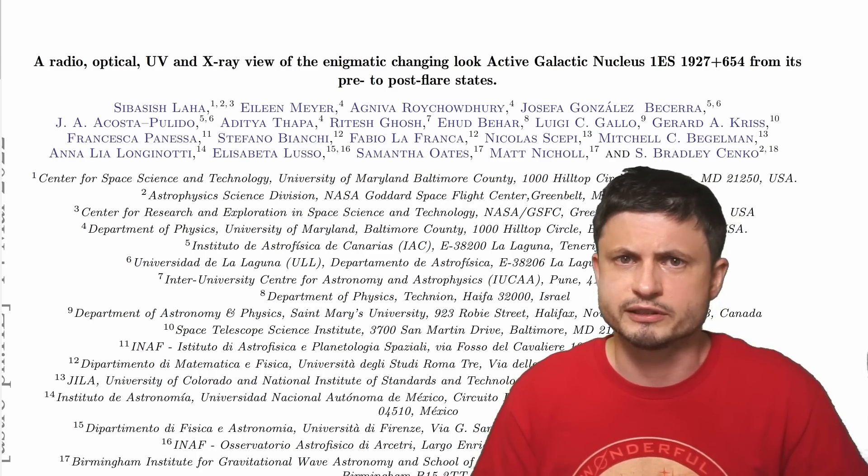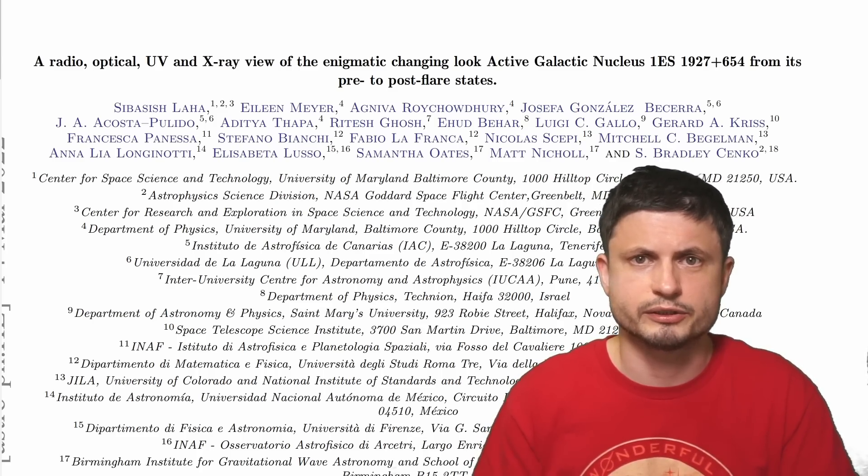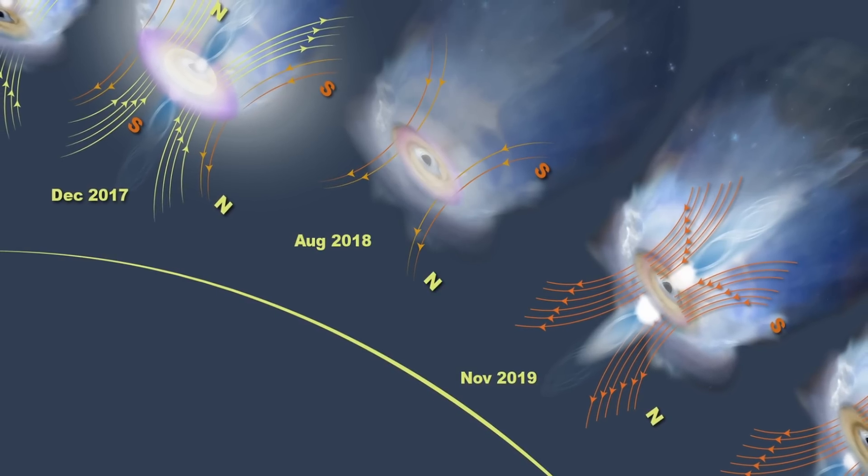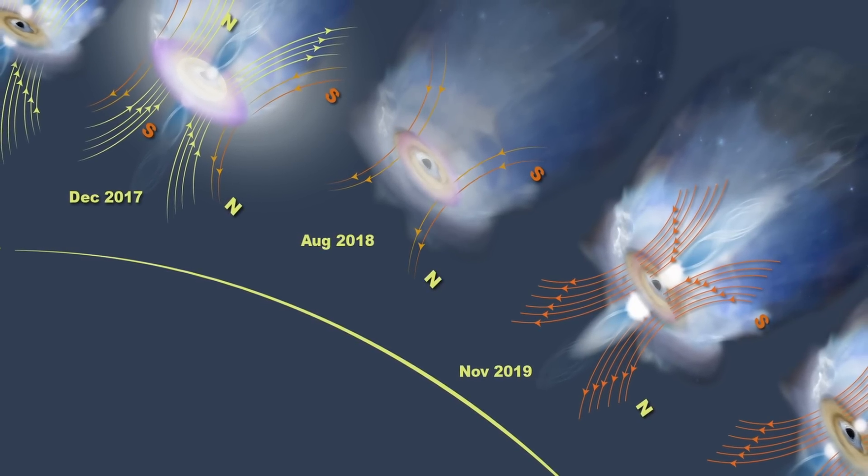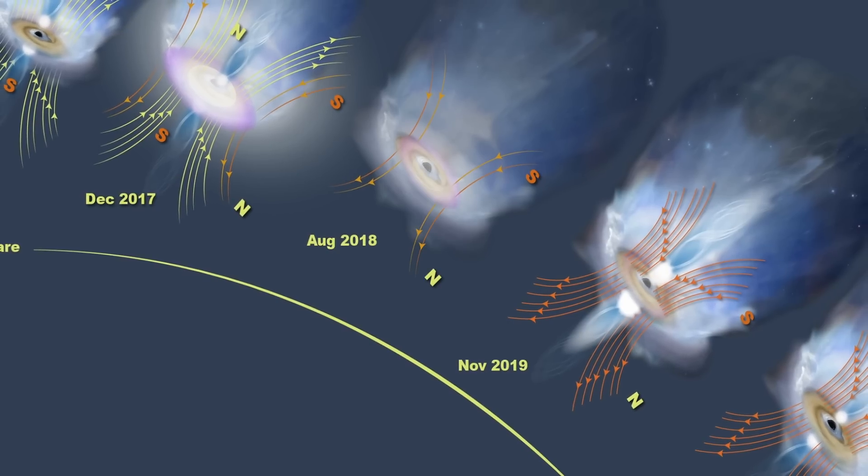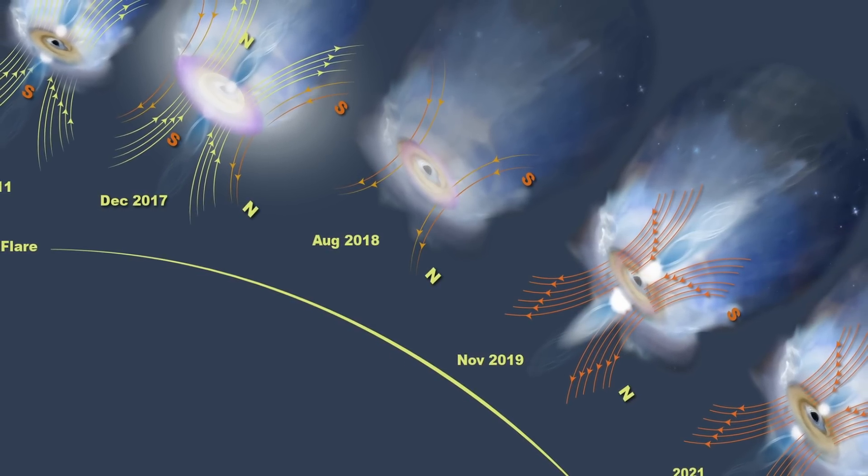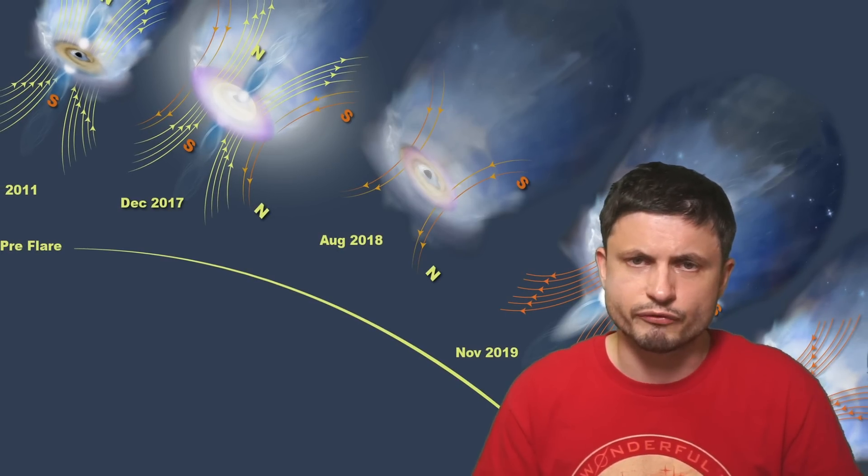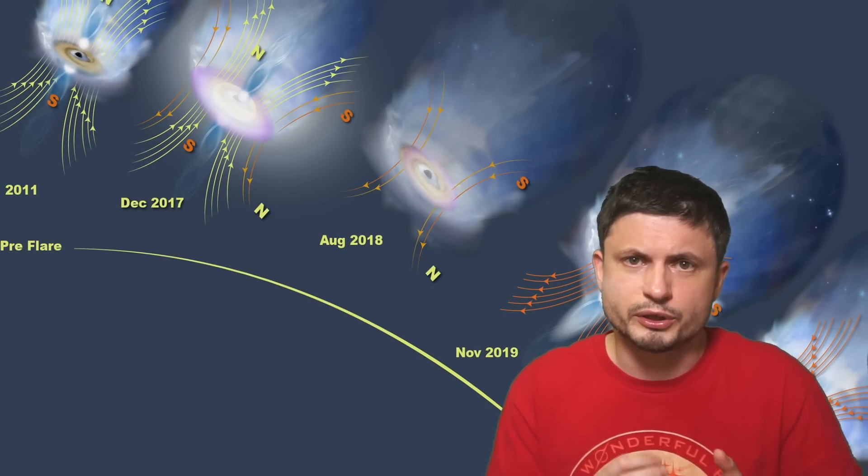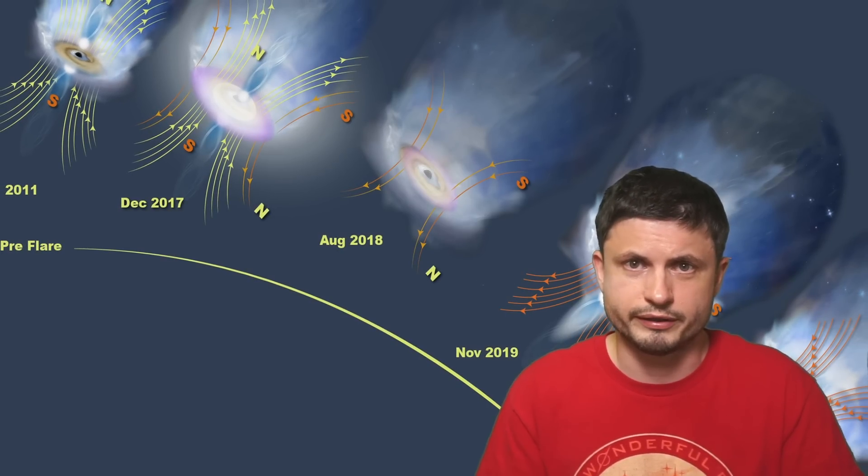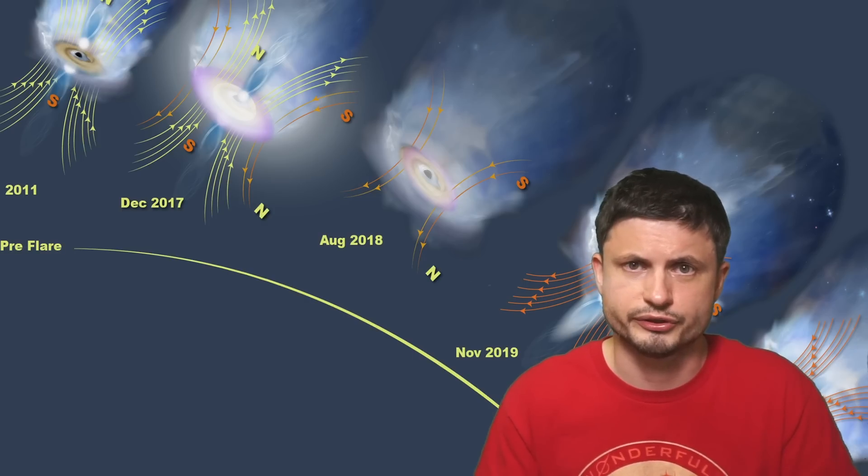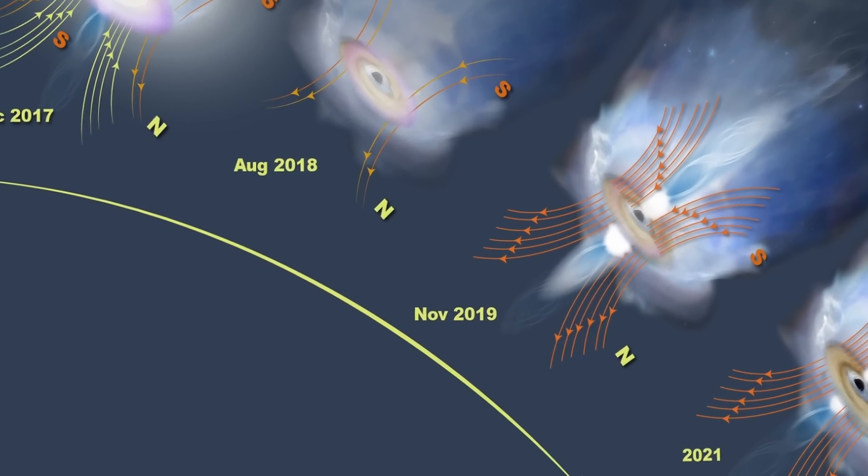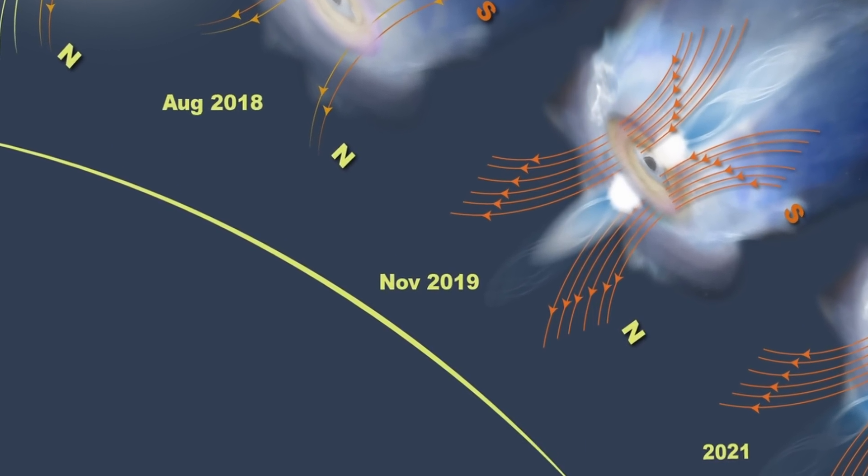As always, all of the relevant links and the paper itself are in the description below. And as all of this happened, the disk started to heat up while the magnetic field started to weaken, which is how they explain the lower production of the x-rays. And once the reversal is complete, that's when everything returns to normal, but now the north is where the south was and vice versa, with all of this happening within approximately 10 years.